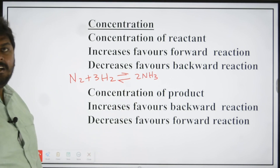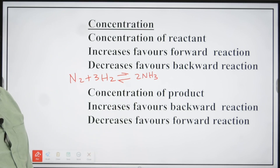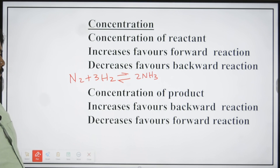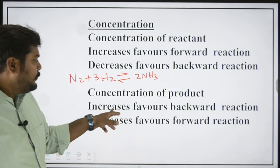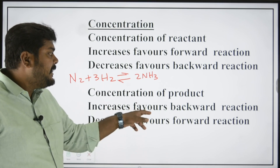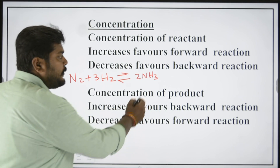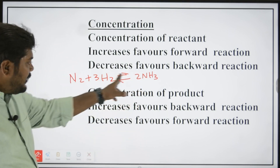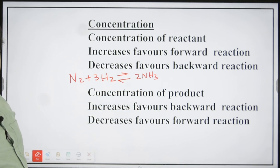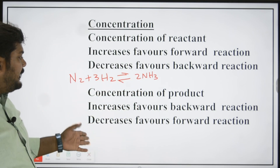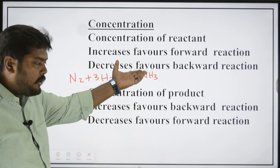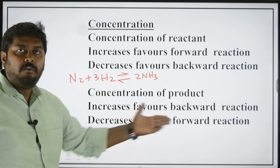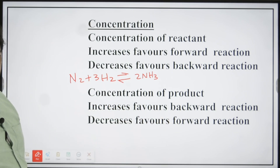Ammonia decomposes back to nitrogen and hydrogen. Similarly, in your product side: if I increase the concentration of ammonia, automatically the backward reaction occurs — decomposition occurs. If the concentration of ammonia is decreased, it favours the forward reaction.